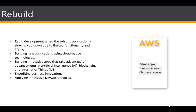This way you can put your resources into developing the app and not really have to worry about what underlying infrastructure it will operate on. So when to use this? For rapid development when an existing app is slowing you down and you need to take your business to the next level. Building new apps using cloud-native technologies, building innovative apps to utilize IoT, AI, or blockchain — and the AWS blockchain service makes life a lot easier. Expediting innovation, and again, applying innovative DevOps practices.